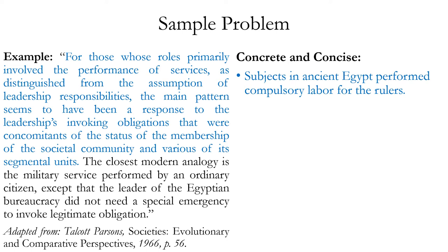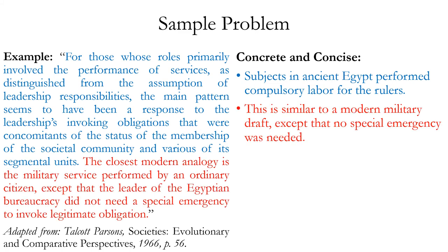Let's look at the second sentence. "The closest modern analogy is the military service performed by an ordinary citizen" — that first clause isn't so bad. It's talking about military service by ordinary citizens, in contrast to professional soldiers. "Except that the leader of the Egyptian bureaucracy did not need a special emergency to invoke legitimate obligation." Simplified: this is similar to a modern military draft, except that no special emergency was needed.